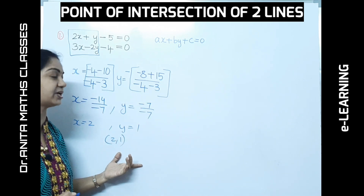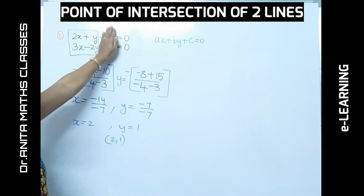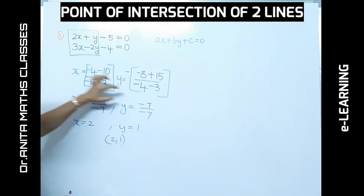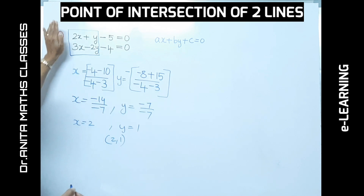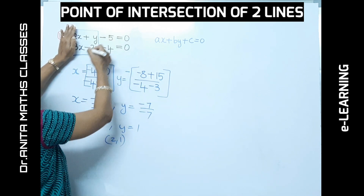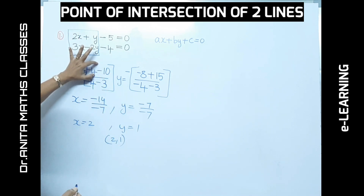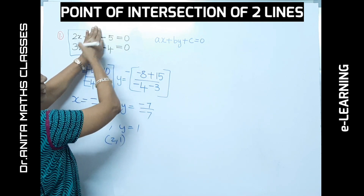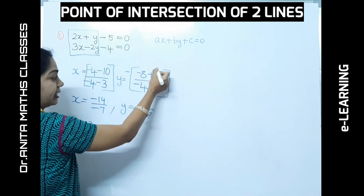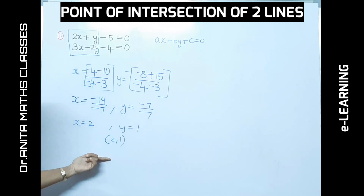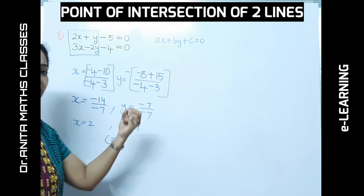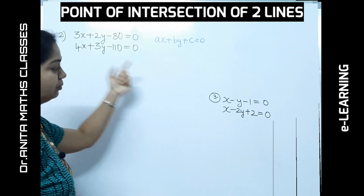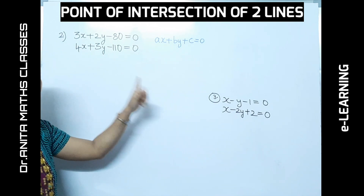To summarize the method: hide the constant part, cross multiply the coefficients to get the denominator. Then hide the x part and cross multiply to get the x numerator. Then hide the y part, cross multiply, and remember to apply a negative sign to get y. In practice, this takes only three seconds.